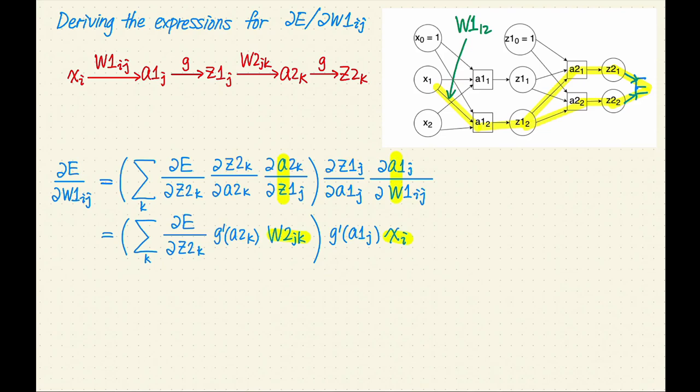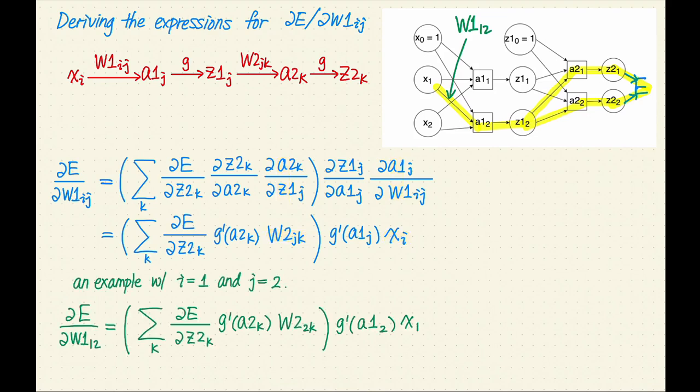The derivative of a with respect to z or w. a2 is a sum of z1 weighted by W2, so partial a2 over partial z2 is equal to W2. Similarly, a1 is a sum of x weighted by W1, so partial a1 over partial W1 is equal to the input value x. This is all the simplification we can do without knowing the expressions for the error function E and the activation function g. You can also derive the specific expression for W1 sub 1,2. Here it is.